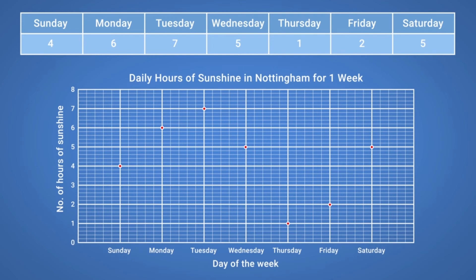Finally, to make our graph a line graph, we now need to connect each point in order. This makes the data easier to read.